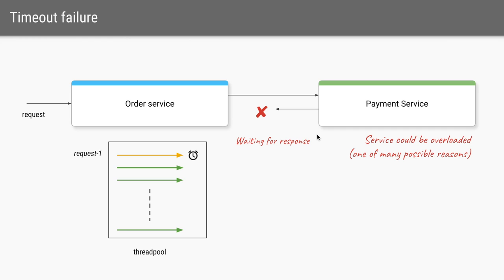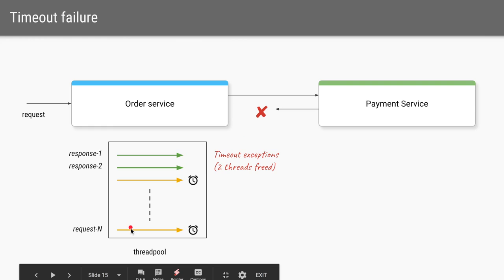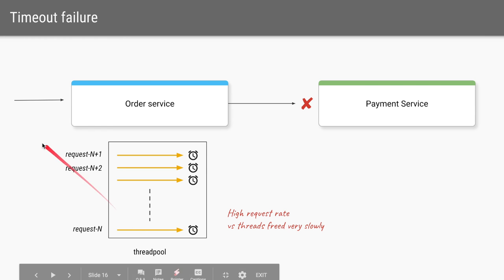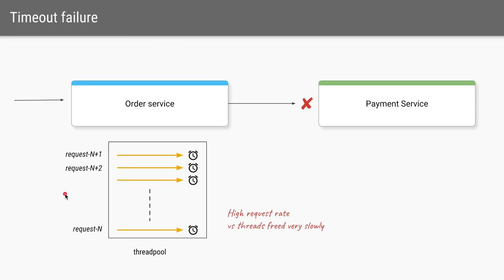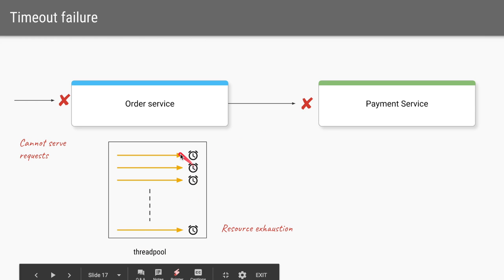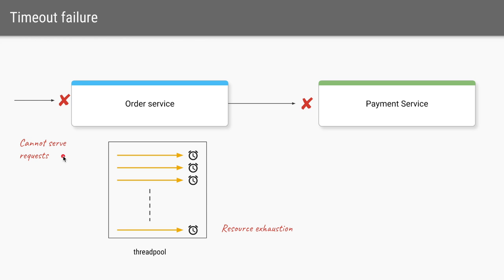In a timeout failure, the order service makes a call to the payment service, but instead of an exception, the payment service takes a long time to respond. A thread is assigned and sits waiting for the response. When another request comes in, another thread is assigned — and that thread is also waiting. If the rate of incoming requests is very high, at some point all threads in the thread pool will be busy waiting for a response from the payment service, completely exhausting the thread pool. The order service itself will then be unable to serve any more requests.